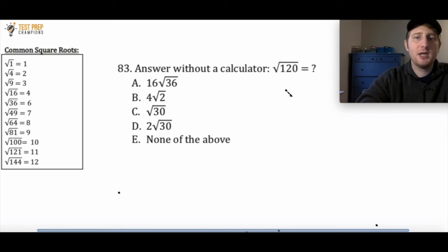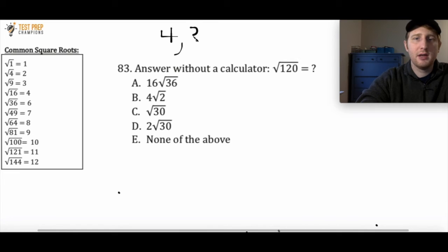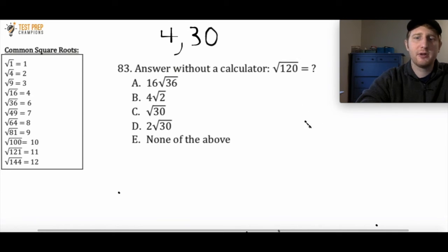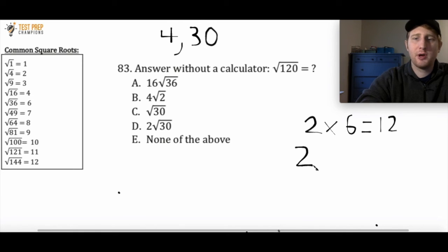To start a question like this, you want to think of numbers that multiply together to give you 120, and see if you can find numbers that also appear on the common square roots list. For example, 4 and 30 — four times 30 gives us 120. A trick: think of numbers that multiply to give you 12, then put a zero on the end. Two times 6 gives me 12, so two times 60 gives me 120. Same with 4 and 30: four times 3 is 12, so four times 30 is 120.